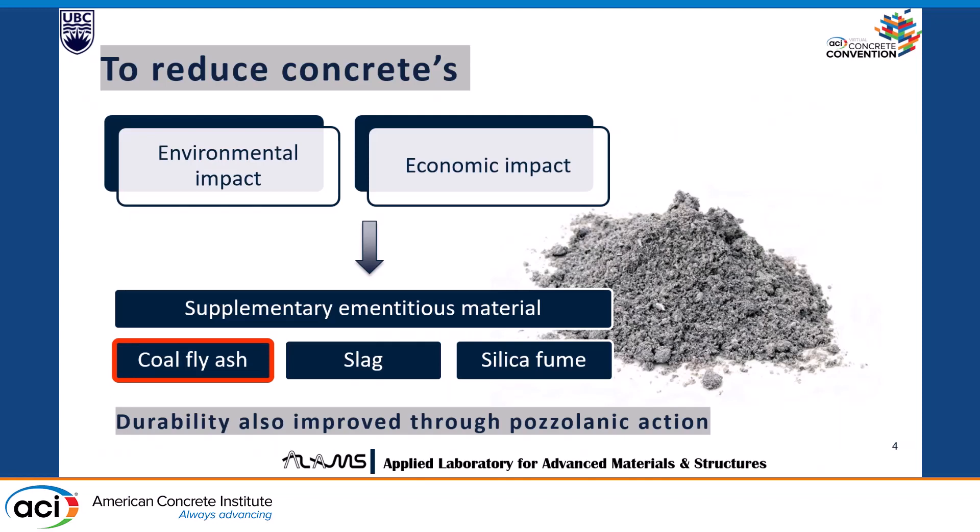To reduce concrete's environmental and economic impact — as cement is very expensive — supplementary cementitious materials are used. These include coal fly ash, slag, and silica fume, with fly ash being the most popularly used. It not only reduces environmental and economic impact, but also increases the durability of concrete and some mechanical properties through pozzolanic activity.